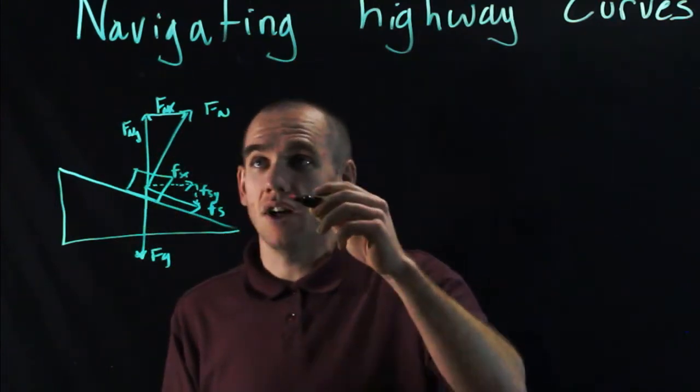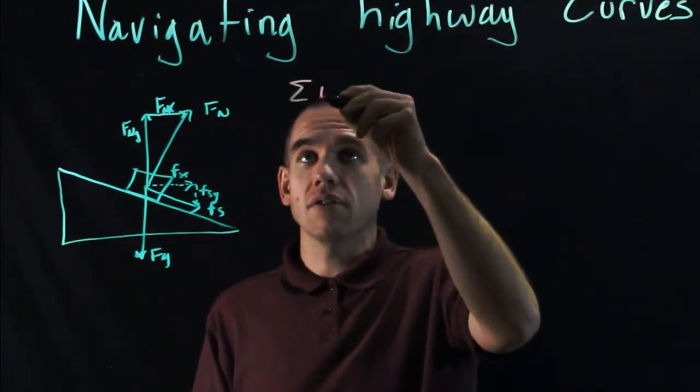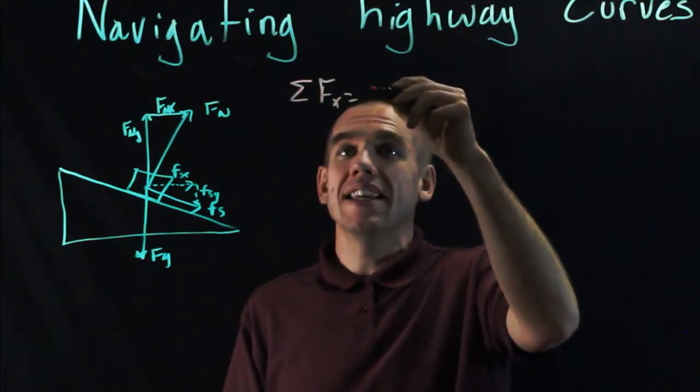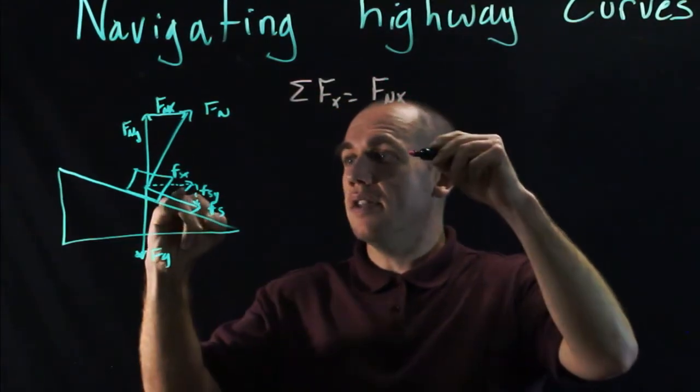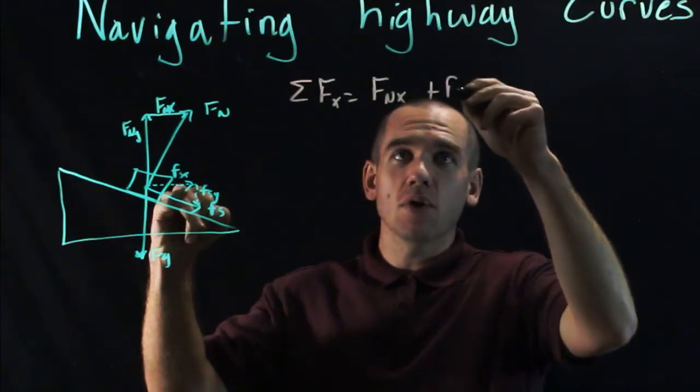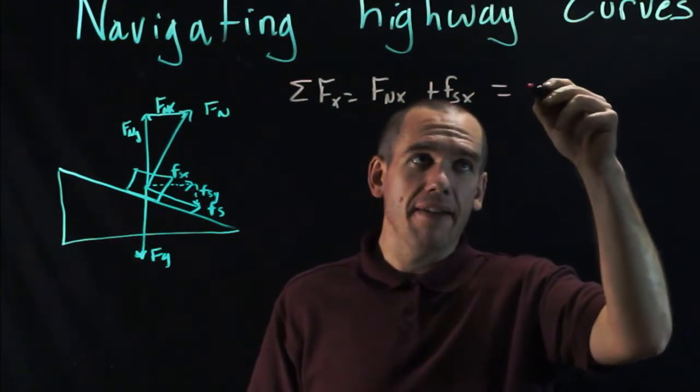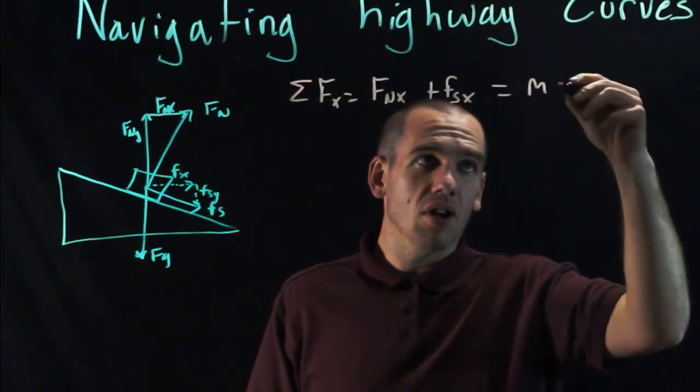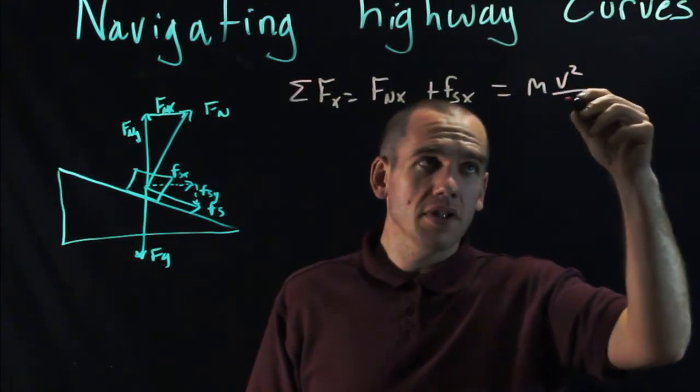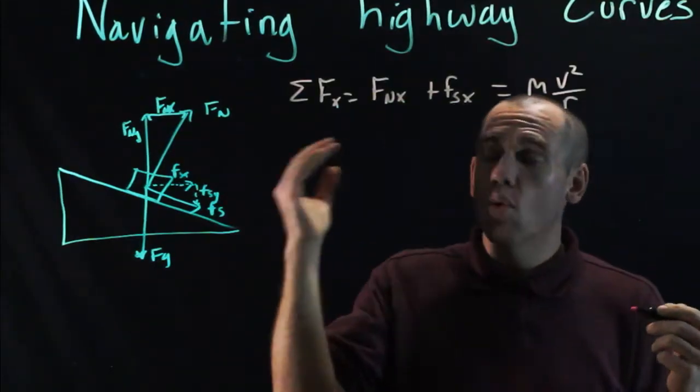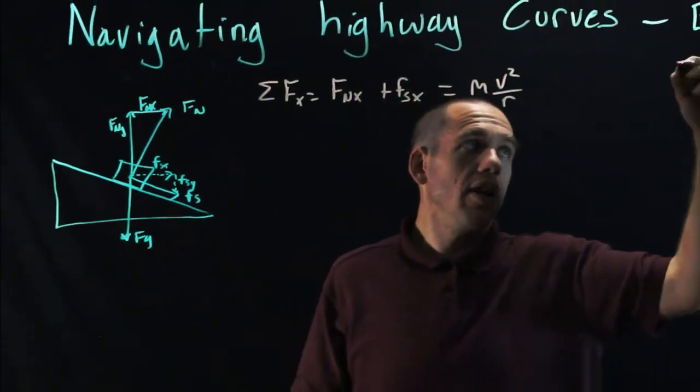So let's apply Newton's second law in the X direction. The net force in X is F_nX plus F_sX. Those two forces together are helping me turn the corner. They are causing me to have centripetal acceleration. They're causing the centripetal force. So that's Newton's second law in the X direction. We're also going to have Newton's second law in the Y direction.